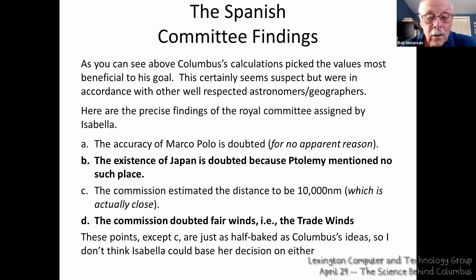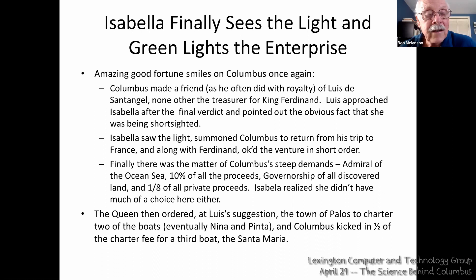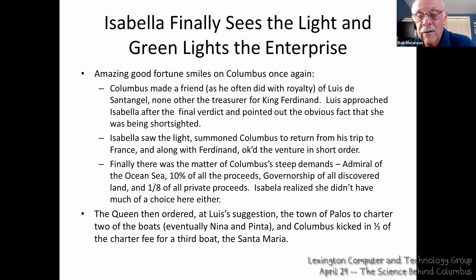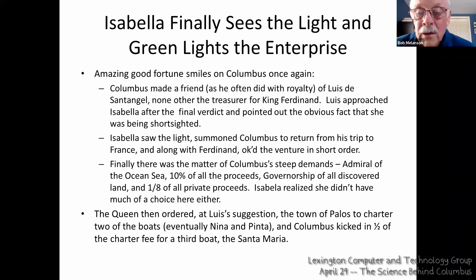What happens next, since we know Columbus actually did the trip? He was on his way to France. However, Isabella finally saw the light and green-lit the enterprise. It turns out Columbus had made a friend of Louis de Santángel, none other than the treasurer of King Ferdinand. Louis approached Isabella and pointed out the obvious fact that she was being short-sighted: Genoa and Venice had the overland route, Portugal had the Cape of Good Hope route, and Spain had nothing. She apparently did offer to pawn her jewels, but Louis, who was very wealthy as well as being royal treasurer, told her if money was a consideration, he would gladly pay for it. So Isabella summoned Columbus to return and okayed the venture.